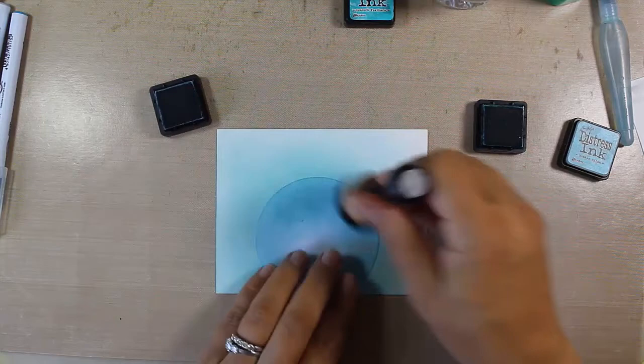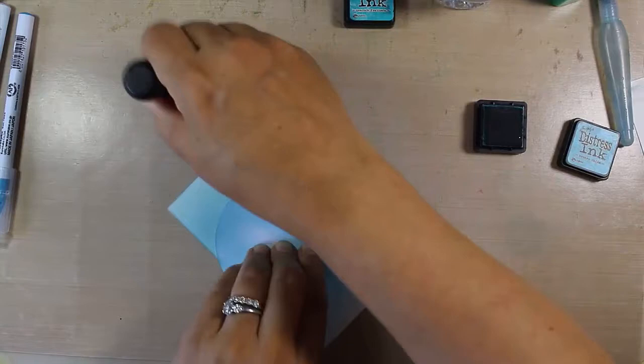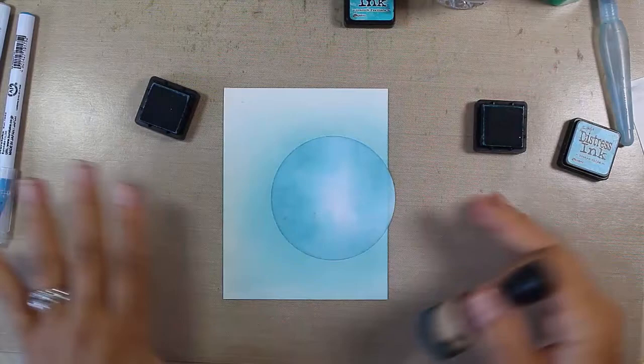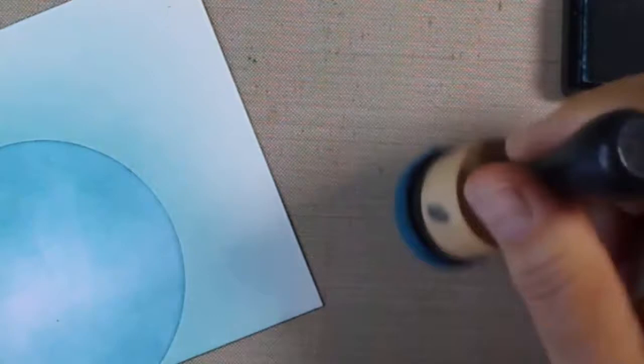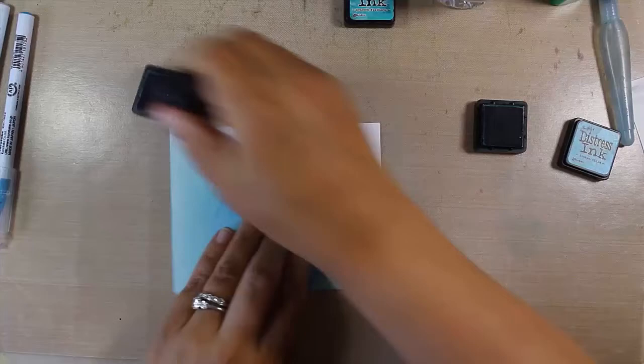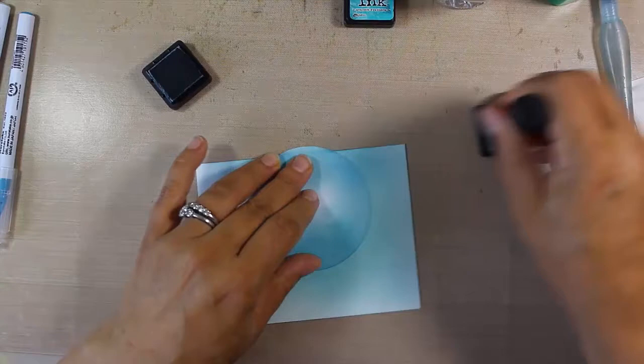I like to come always back in with my lighter shade just to really get a nice effortless blend. I'll have a firmer touch here around the circle just to accentuate that, and then a lighter touch. Depending on the amount of pressure that you apply, you can get it quite compressed or keep it nice and light.